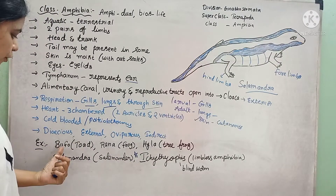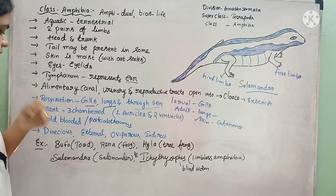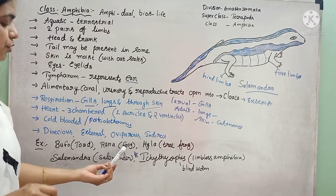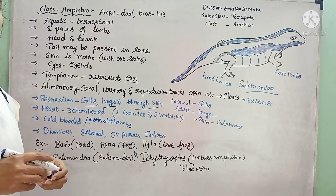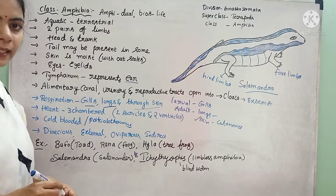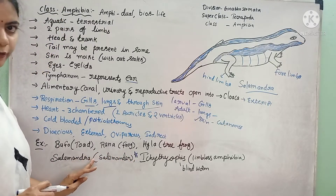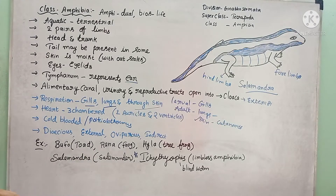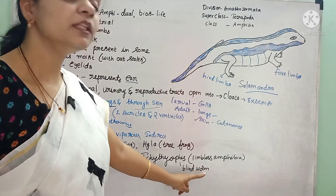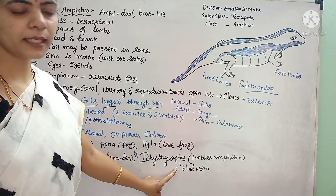Examples of amphibians are: Bufo, which is called toad; Rana, which is called frog; and Hyla, which is called tree frog. The difference between toad and frog is that the toad has shorter legs compared to the frog, which has longer legs relative to its body. The toad's skin is highly dry, whereas the frog's skin is moist. Frog legs are made for hopping, whereas toad legs are made for crawling. Another example is Salamandra. There is also Ichthyophis, which is a limbless amphibian, just like a worm without any limbs, also called a blind worm.